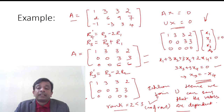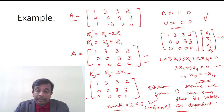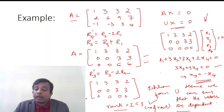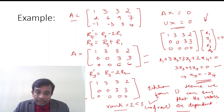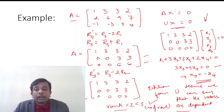Hence we say the vectors are dependent — all column vectors here are not independent. The pivot columns (column vectors where we have pivot elements) would be independent; if we declare x2 and x4 as free variables, then column 1 and column 3 would be independent, while other columns would be dependent. Overall, the column vectors of this matrix are dependent.